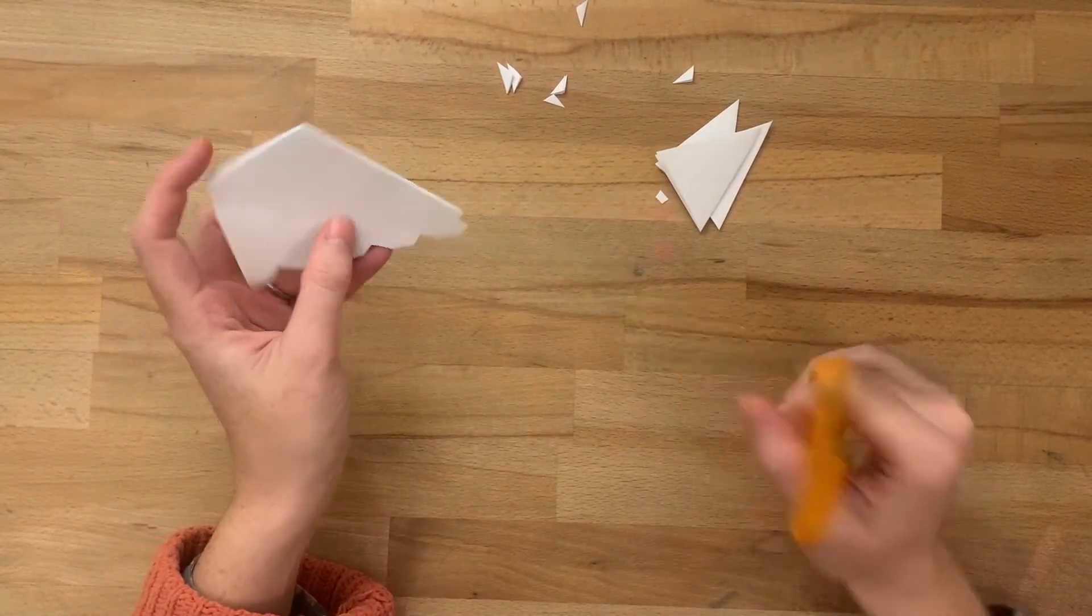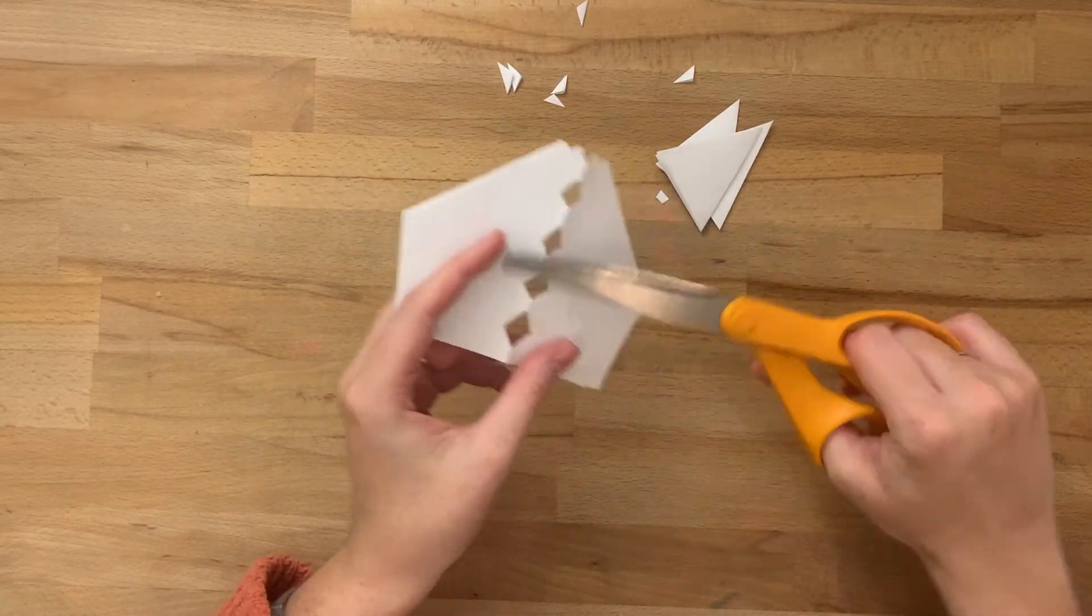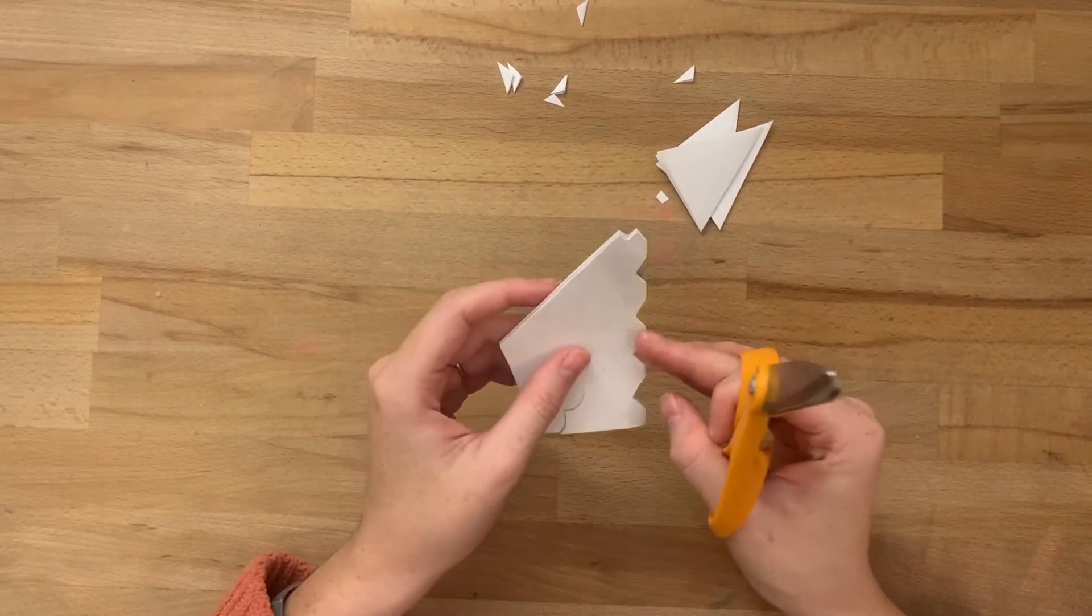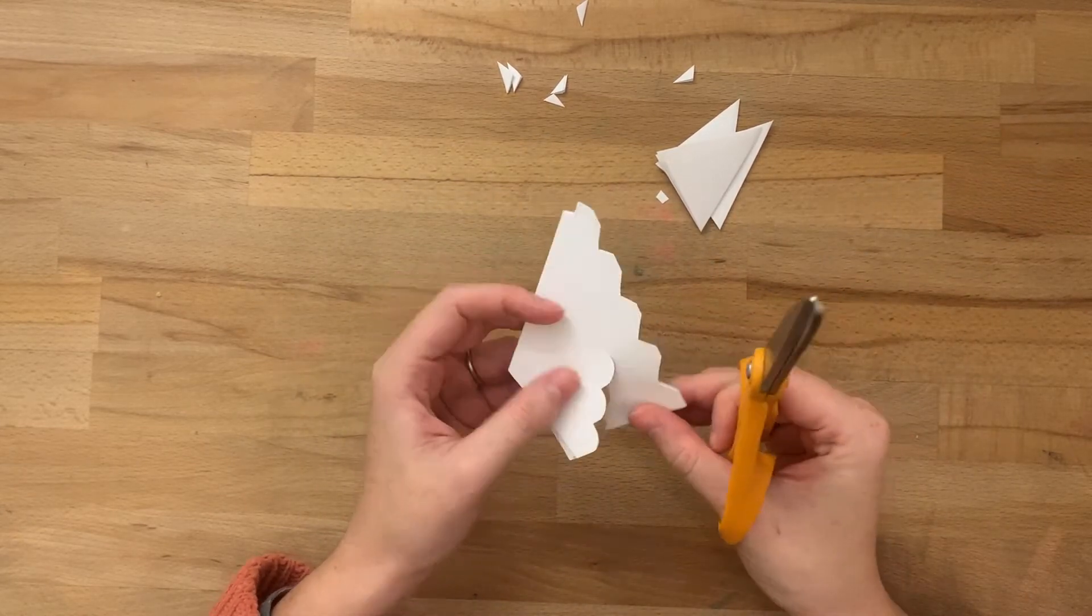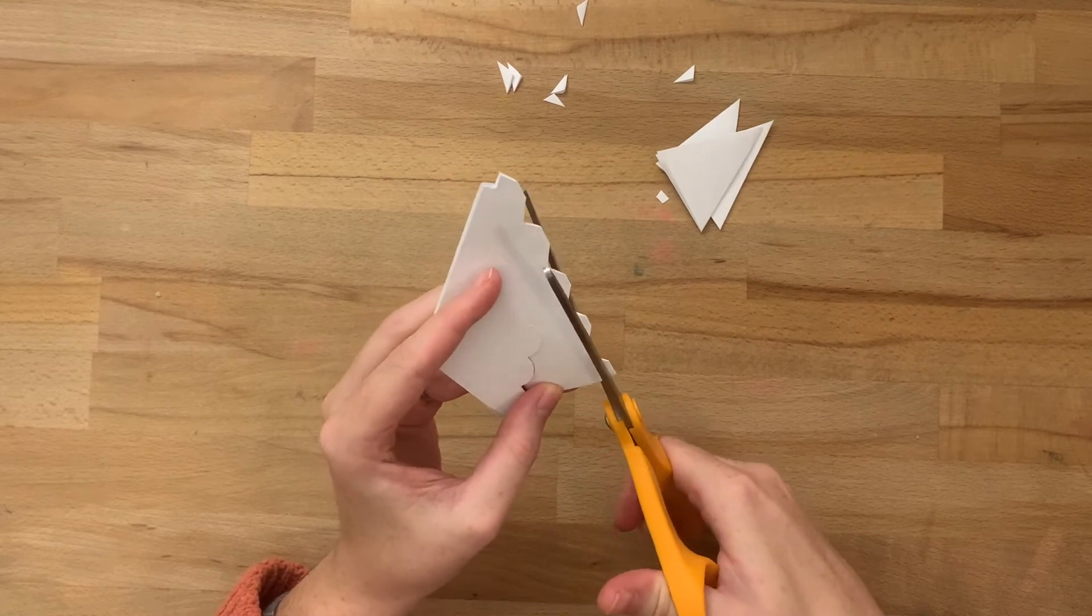You can do little cuts, you can do bigger cuts. Especially when you're cutting on an edge, make sure you leave some space of the fold so it doesn't completely fall apart. I've made that mistake one too many times.